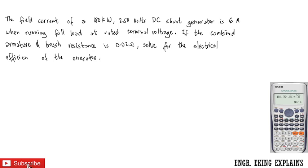In this video we'll be solving a problem involving a shunt generator, continuing our discussion on DC generators. The problem states: the field current of a 180 kilowatt, 250 volt DC shunt generator is 6 amperes when running at full load at rated terminal voltage. If the combined armature and brush resistance is 0.02 ohms, solve for the electrical efficiency of the generator.